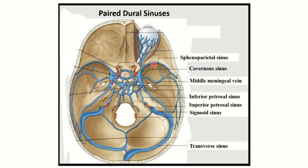Here we can see the paired venous sinuses. This is the sphenoparietal sinus — it is present on this side and also on this side, so it is a paired venous sinus. Second is the cavernous sinus — these are two venous structures that lie on either side of the sphenoid bone, one here and another here. Third is the middle meningeal vein, which also lies on both sides and drains into the cavernous sinus.